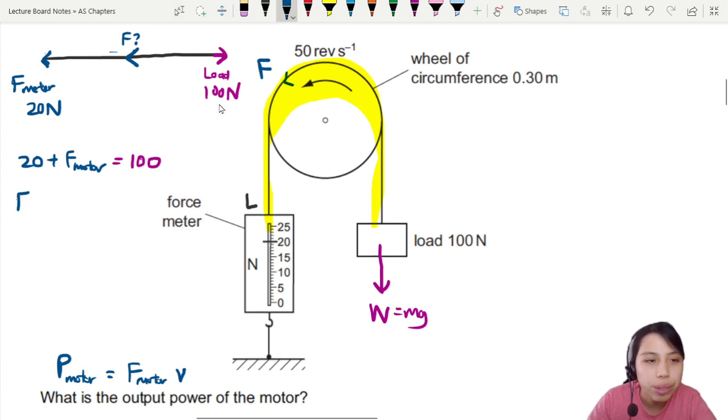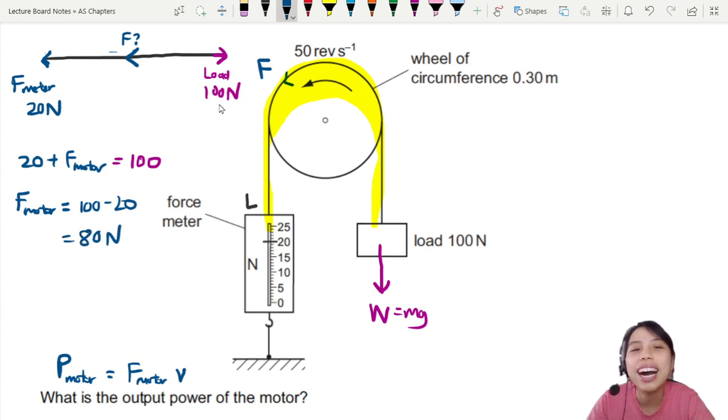So what's the force of the motor exerted on the string throughout this whole rotation? It's going to be 100 minus 20, which gives us 80 newtons. Now we know the motor force is 80 newtons. Next thing is velocity.